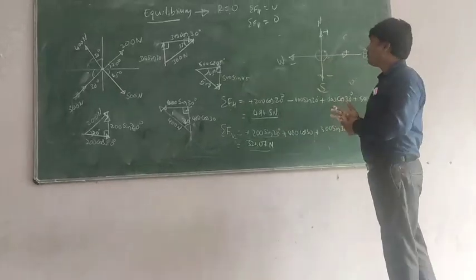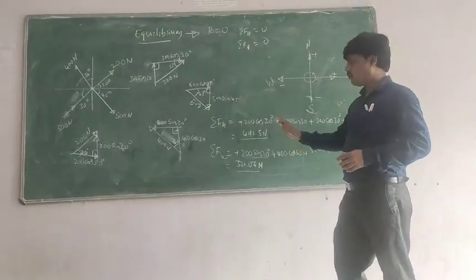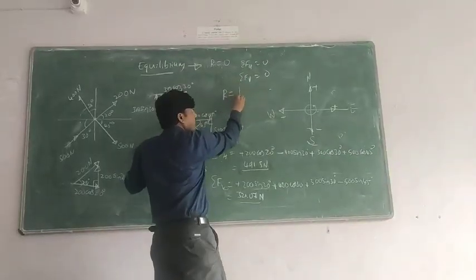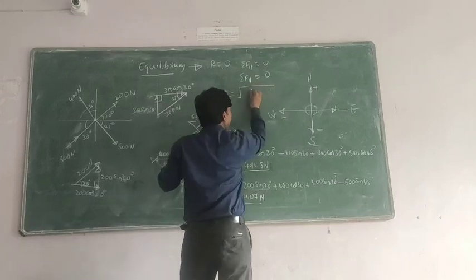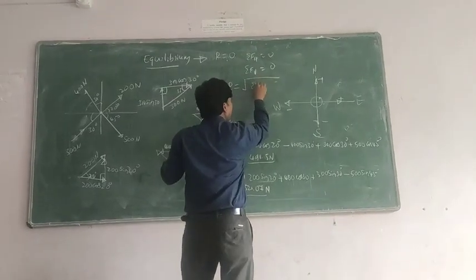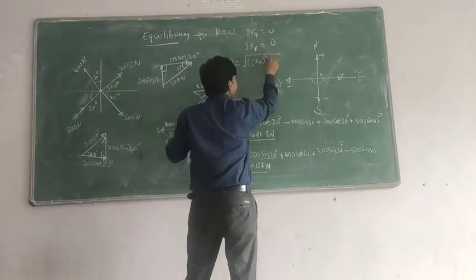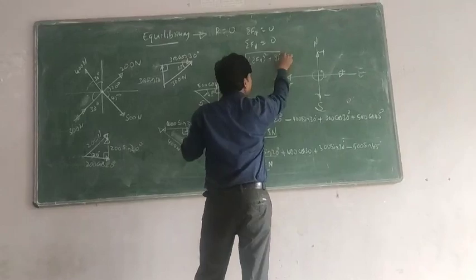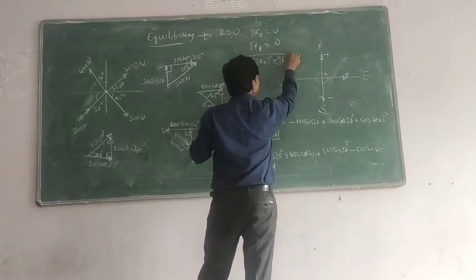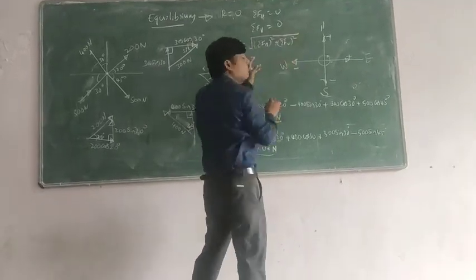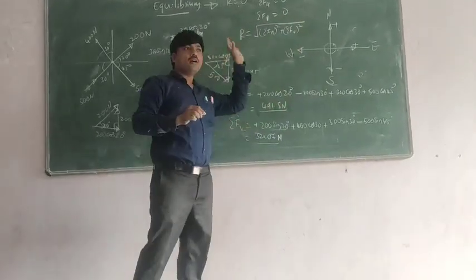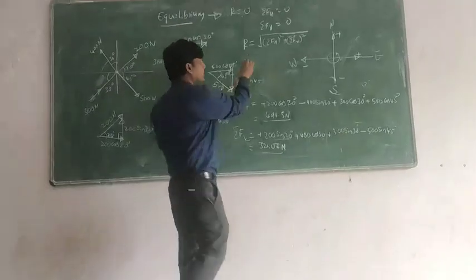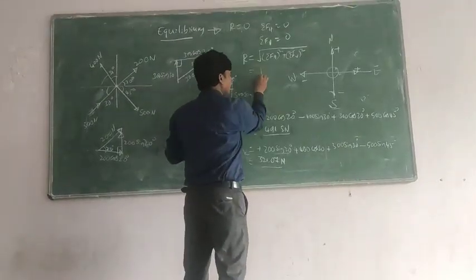Here is the resultant of the vertical force, and R is equal to the summation. We have the horizontal force divided by R, plus the summation of the vertical force. This is the resultant form. So the resultant here is the force divided by R.